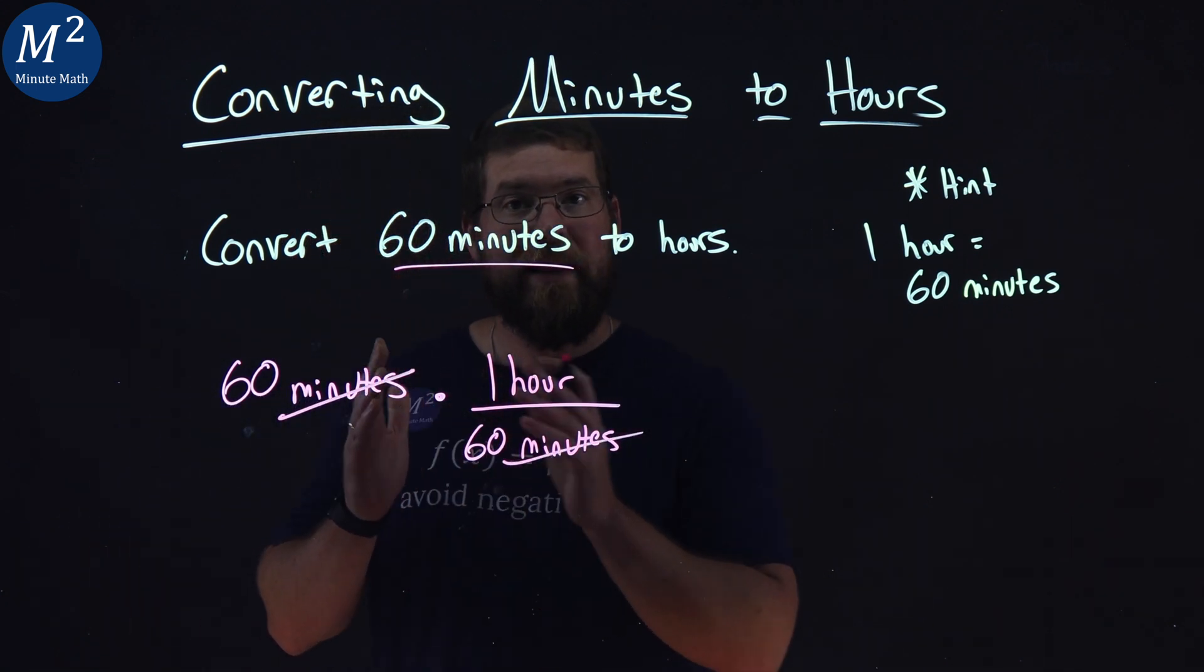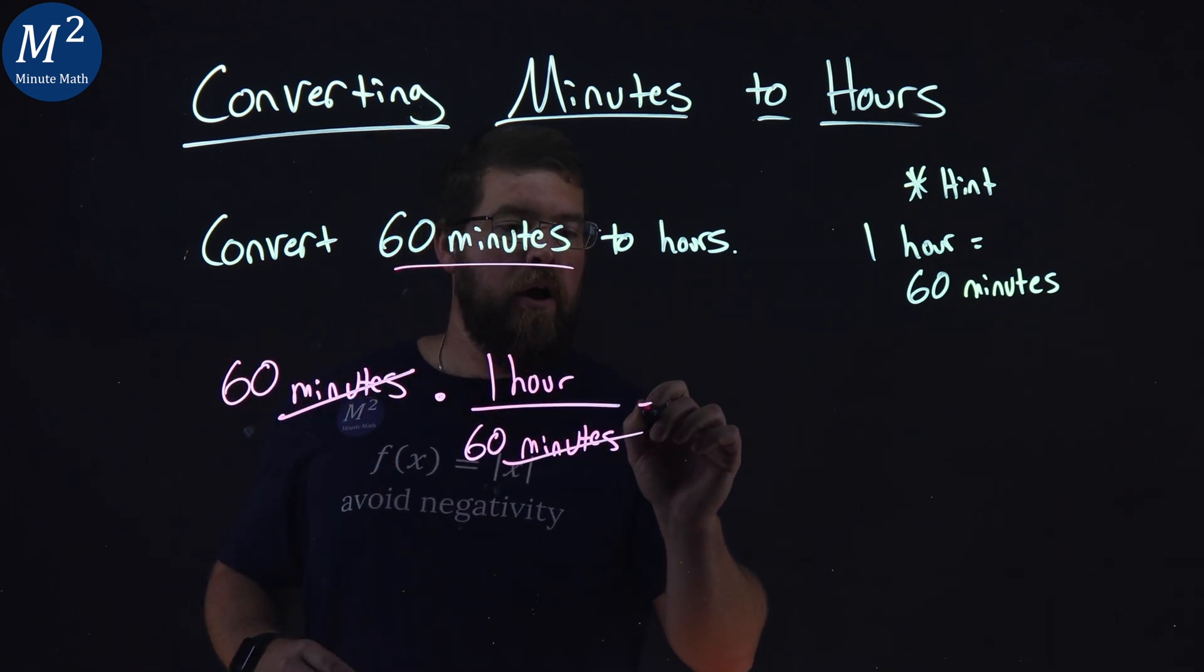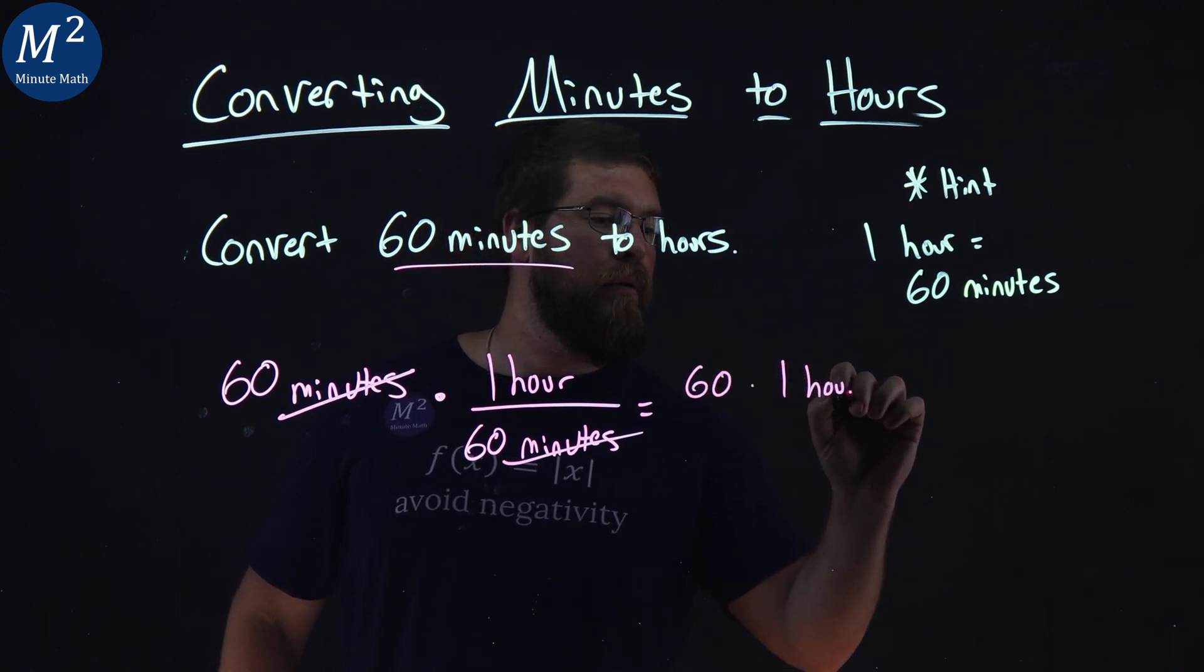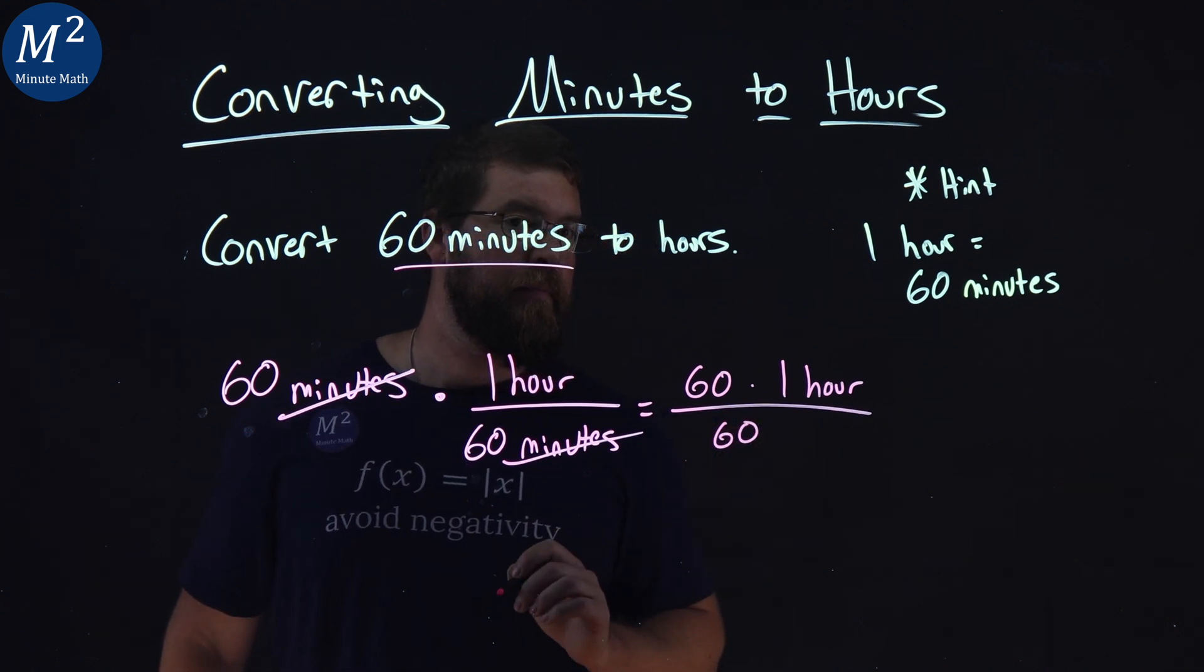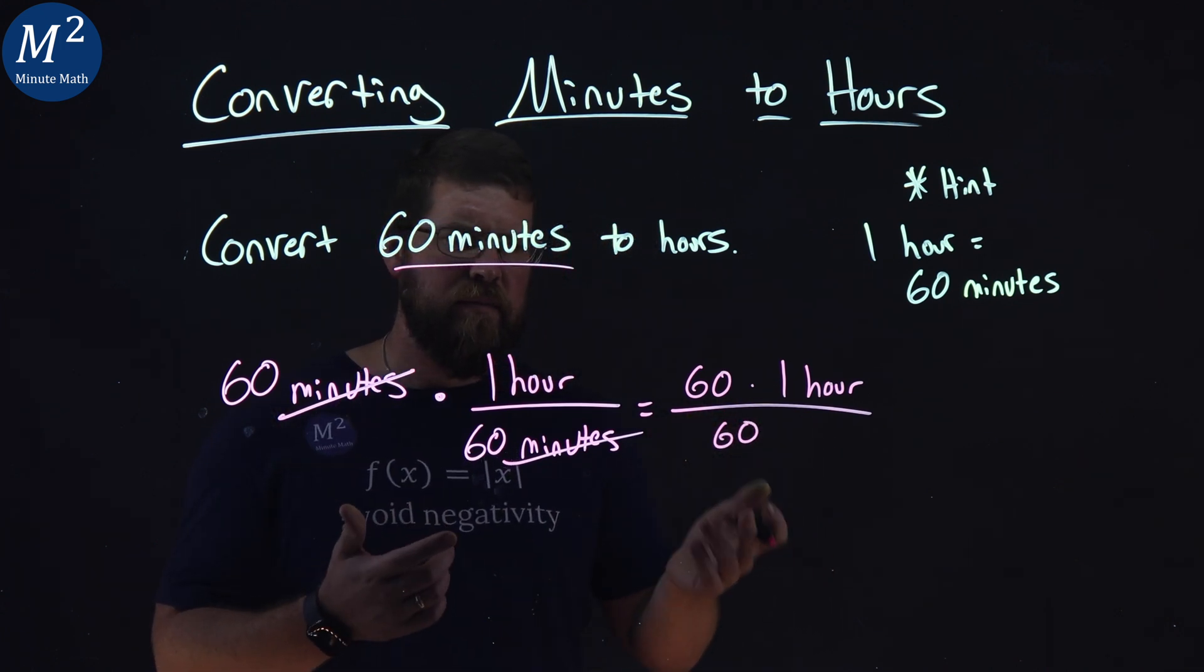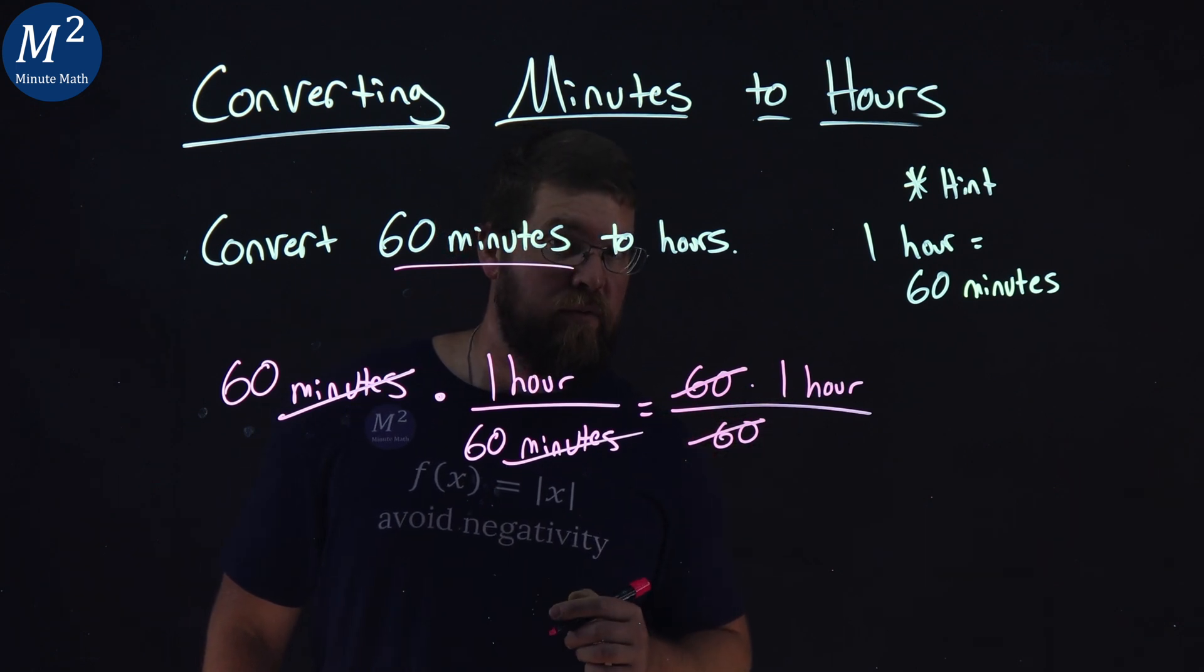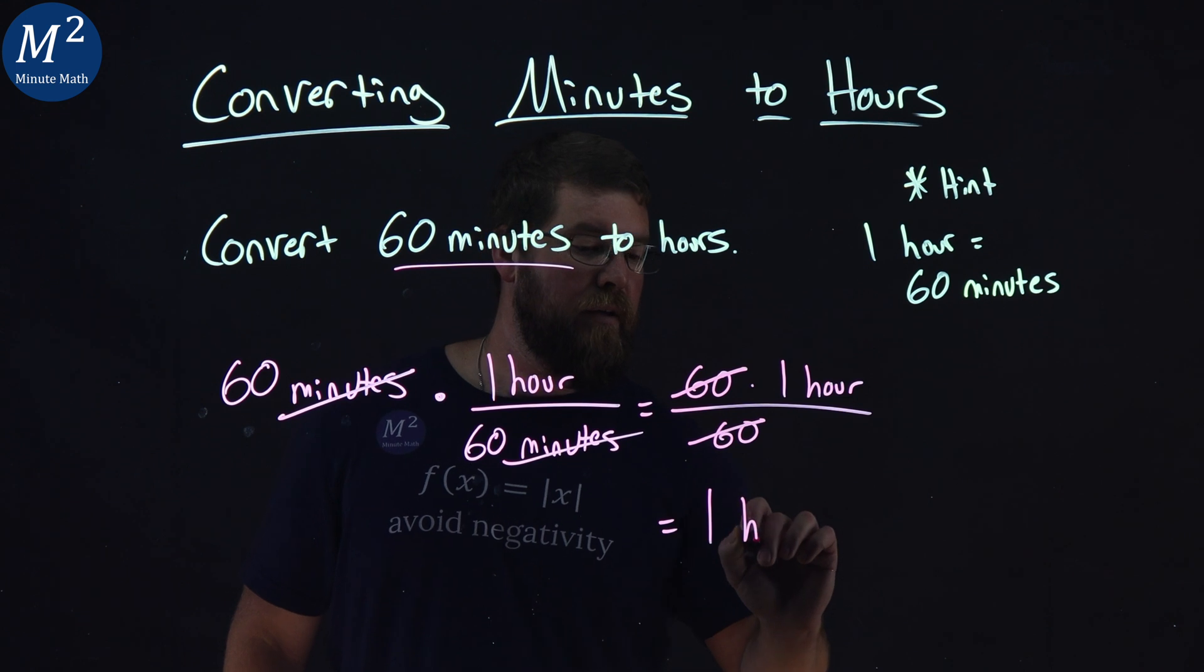Now we multiply this out. We're going to get our answer in hours. We have 60 times one hour over 60. The units cancel. But what also cancels? 60 over 60 cancels as well.